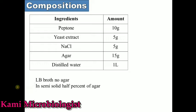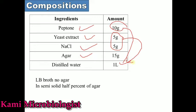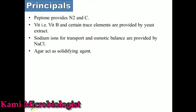Now let's talk about the composition of this media. This media contains peptone at 10 grams per liter. It also contains yeast extract and NaCl, each at 5 grams per liter, agar, and distilled water at one liter. If you want to make LB broth, agar is not used. If you want to make semi-solid LB media, half percent agar is used.